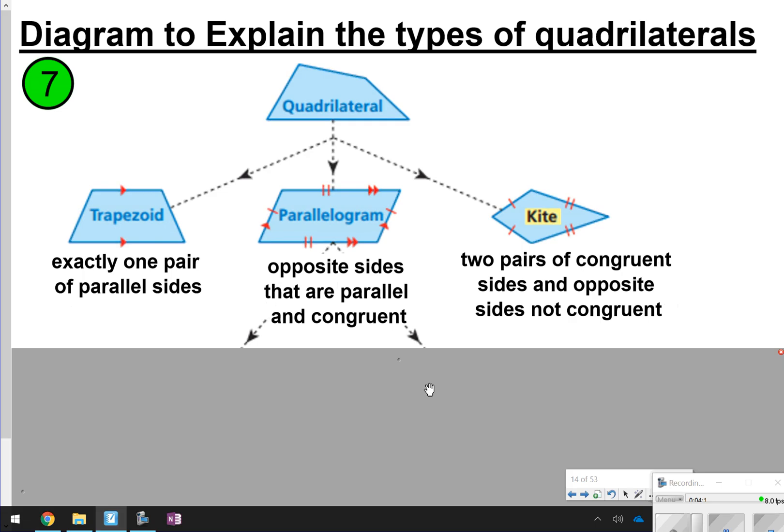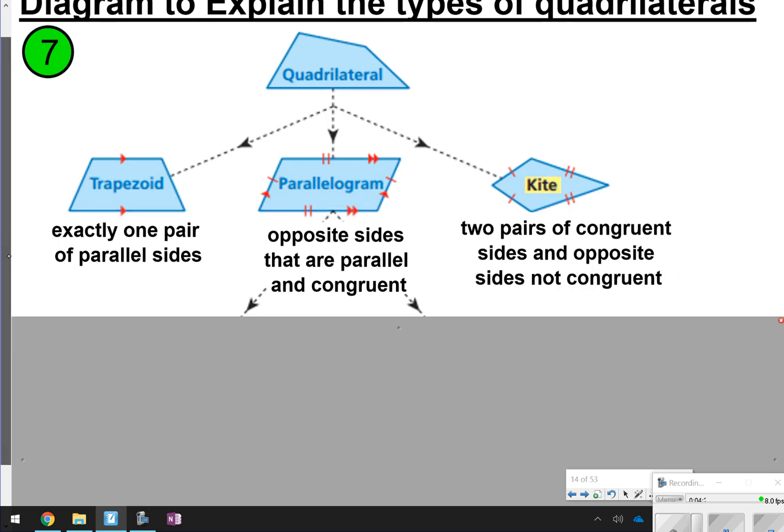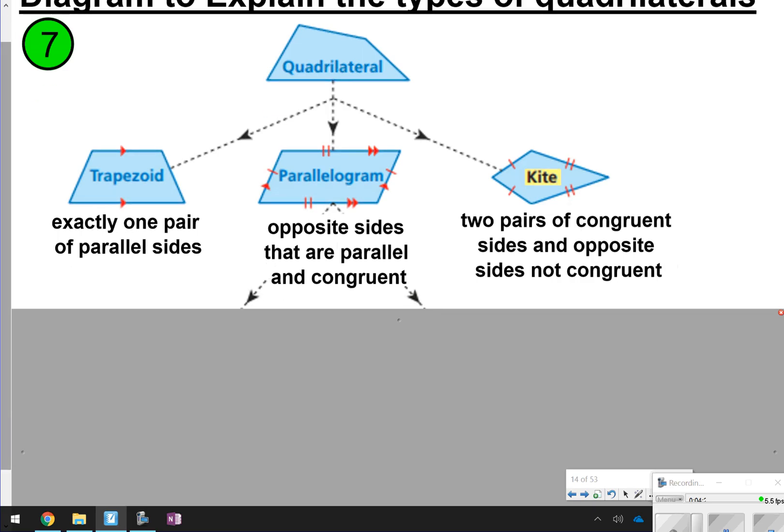Underneath quadrilateral, you have three types. You have a trapezoid, which has exactly one pair of parallel sides. You have a parallelogram, which means you have two pairs of parallel sides, and the opposite sides are congruent. And then for a kite, that's your other form of quadrilateral. Kites have two pairs of congruent sides, and then the opposite sides are not congruent, so it literally looks like a kite.